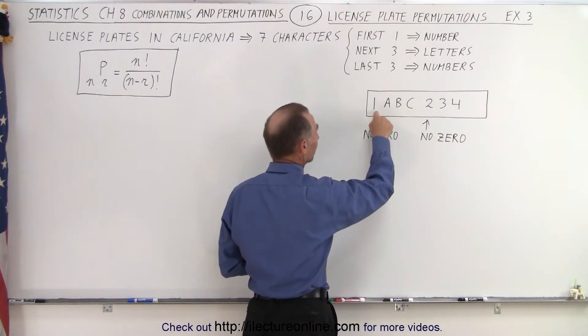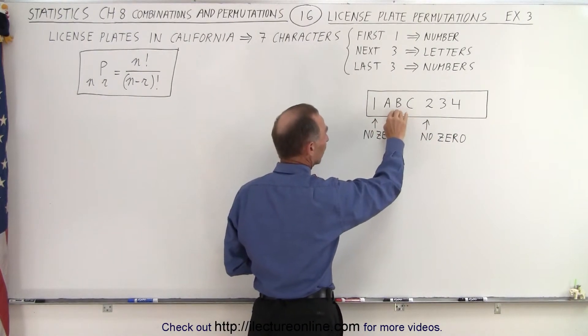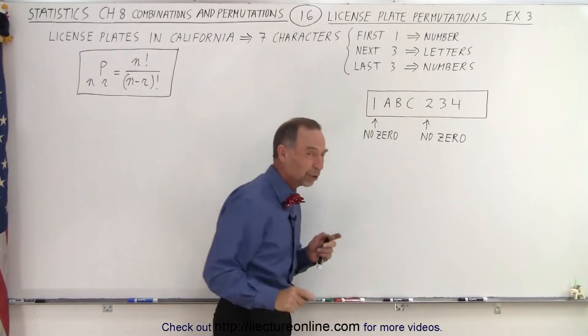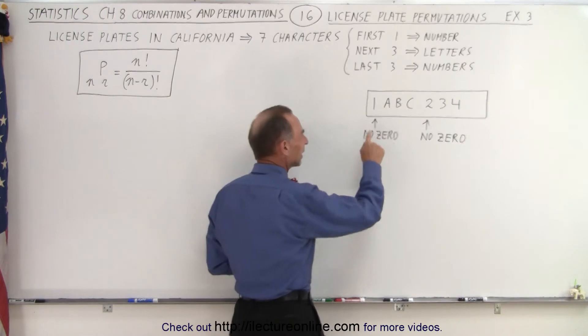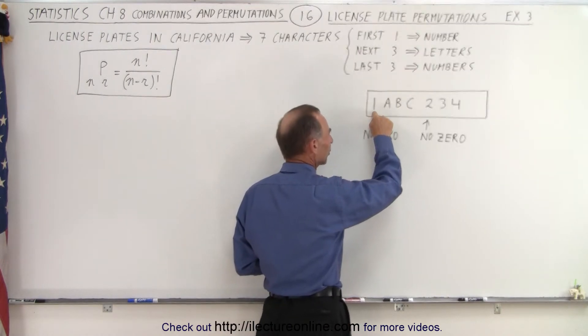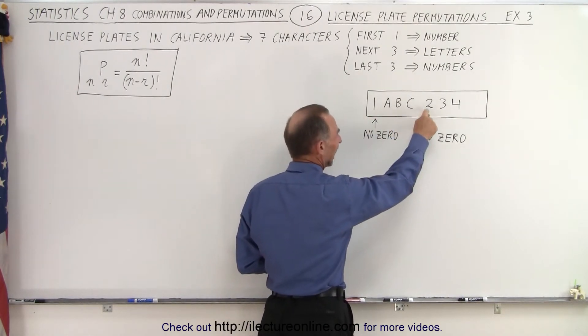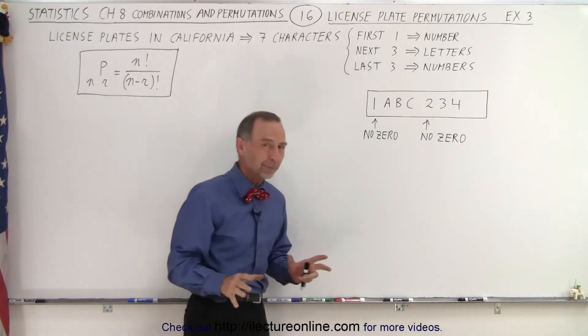There were seven characters. The first character was a number, the next three characters were letters, and the last three characters were numbers again. If I remember right, because I don't ever remember seeing it, this first character cannot be a zero, and the leading of the three numbers cannot be a zero either.